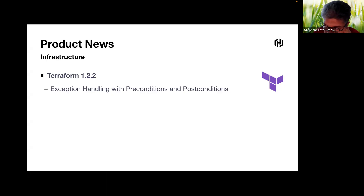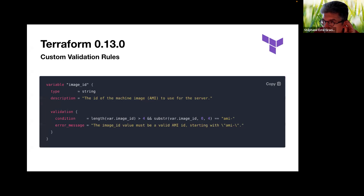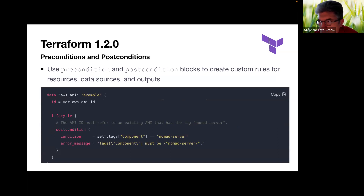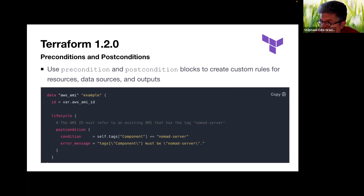Let's start with some latest product news, as we do for every session. First of all, Terraform 1.2 implements exception handling with preconditions and postconditions. If you remember in 0.13, Terraform introduced custom variable validation. Preconditions and postconditions are an extension of these features, which run a certain level of validation over input variables to check if they match what's expected, in order to provide better validations for dynamic module inputs. Terraform 1.2 introduces precondition and postcondition blocks allowing you to capture assumptions in configuration and raise errors earlier. If a precondition or postcondition is not met, an exception is raised with the message you put in the block.